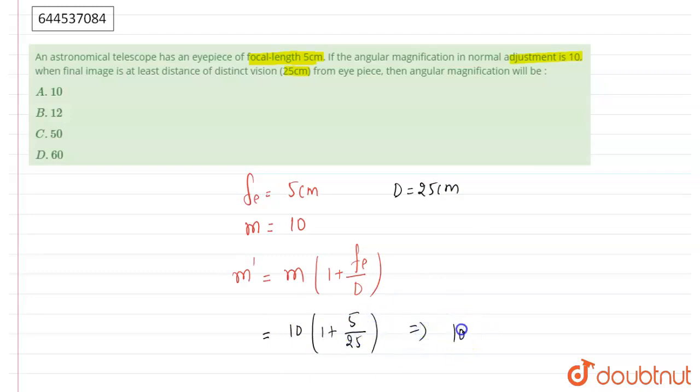So we will get 10 into 30 upon 25. So we will get 12. The magnification will be 12 when the image forms at least distance of distinct vision, and the correct option is B.